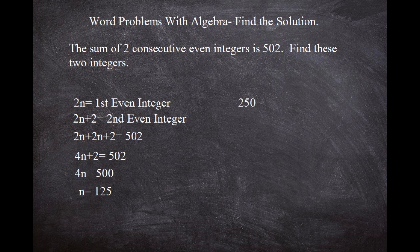So what we're going to do is go ahead and multiply times two, and we'll get 250. So if 250 is the first even integer, then 252 has to be the second even integer, because remember we just added two. And that is the answer: 250 and 252 are the two consecutive even integers that add up to 502.